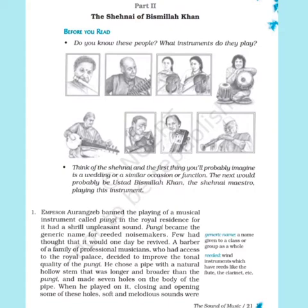Poongi became the generic name for reeded noise makers. 'Generic name' means a name given to a class or group as a whole. It refers to wind instruments which have reeds — like the flute and clarinet. A reed is a stem of a plant. Any musical instrument made with reeds, such as flutes and clarinets, is classified as poongi — it is a broad term for any instrument that uses wind to produce sound.